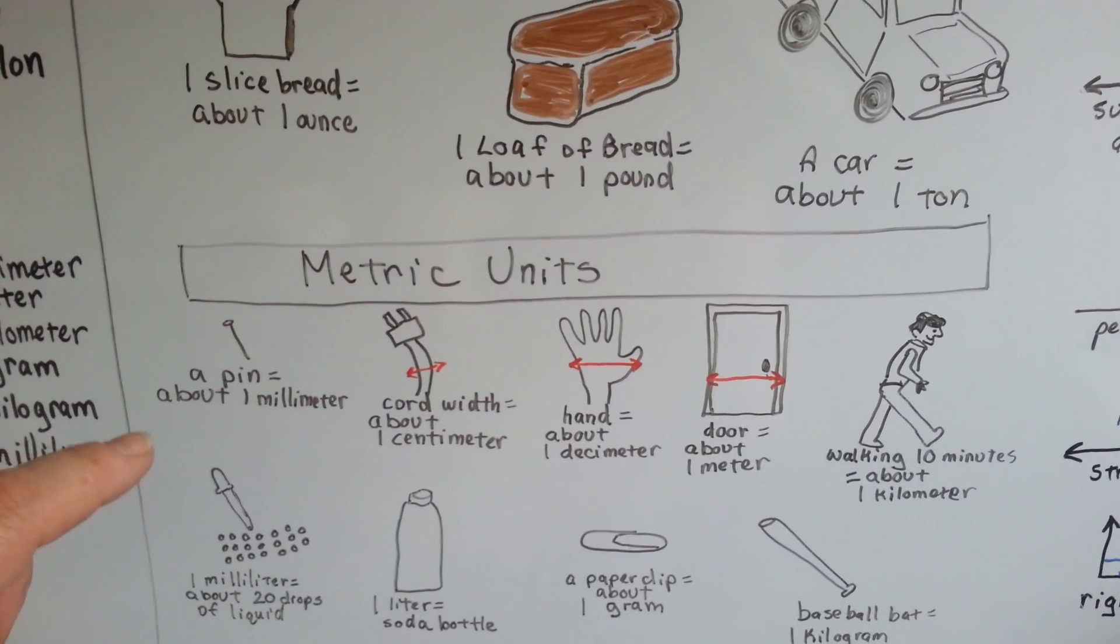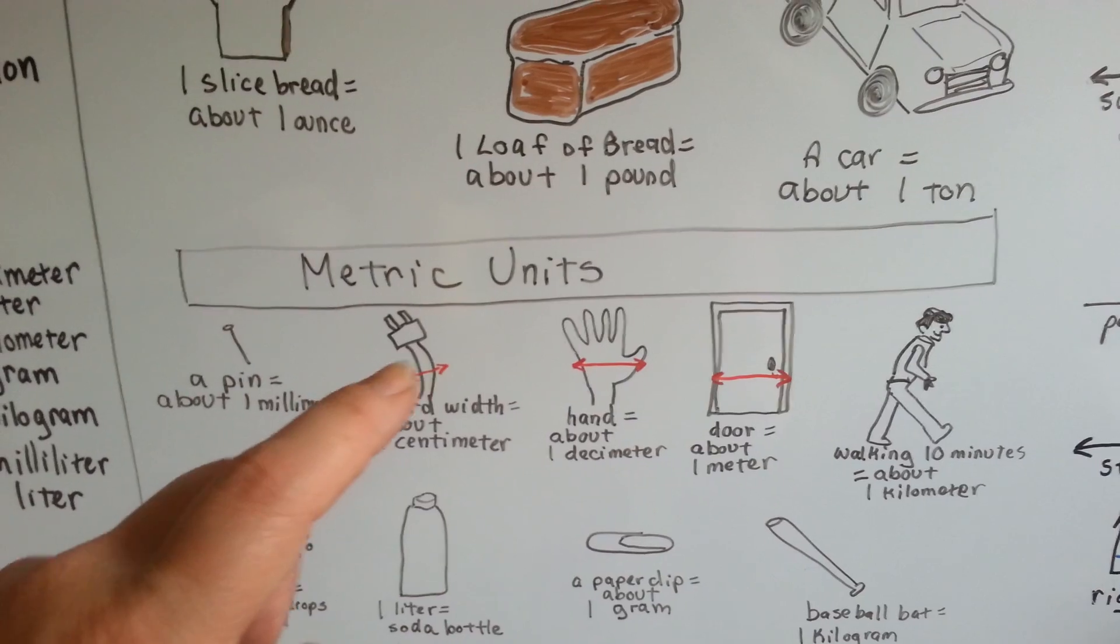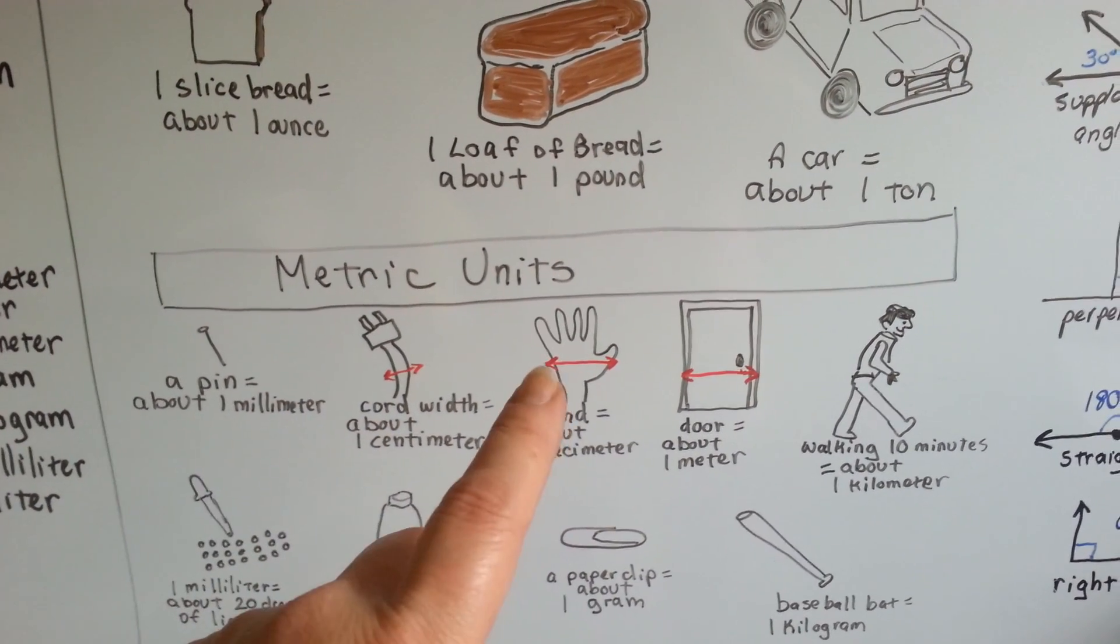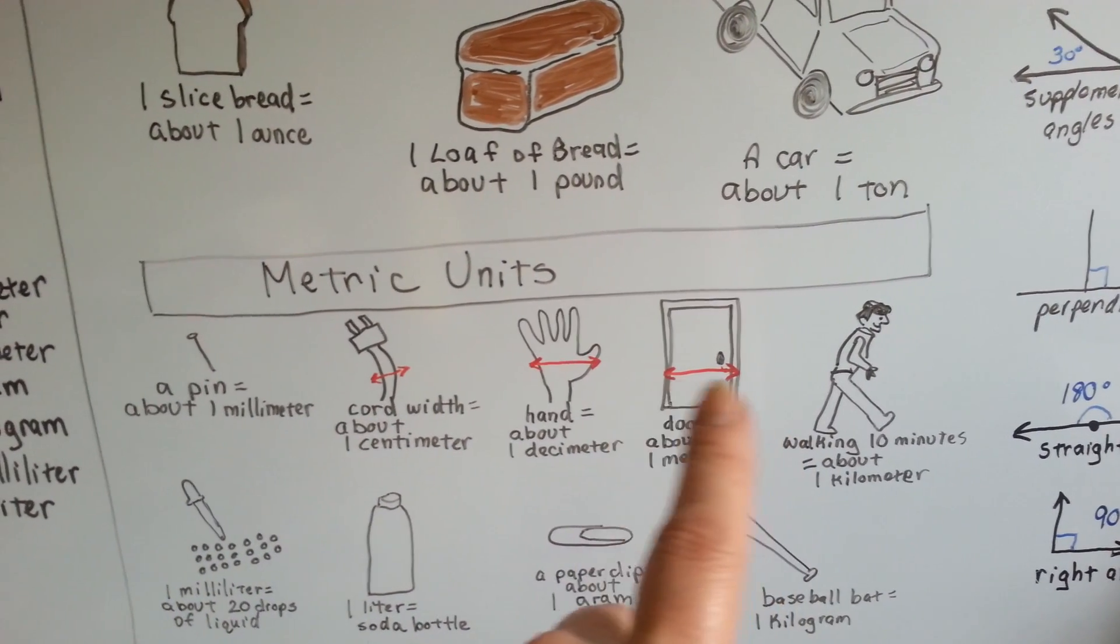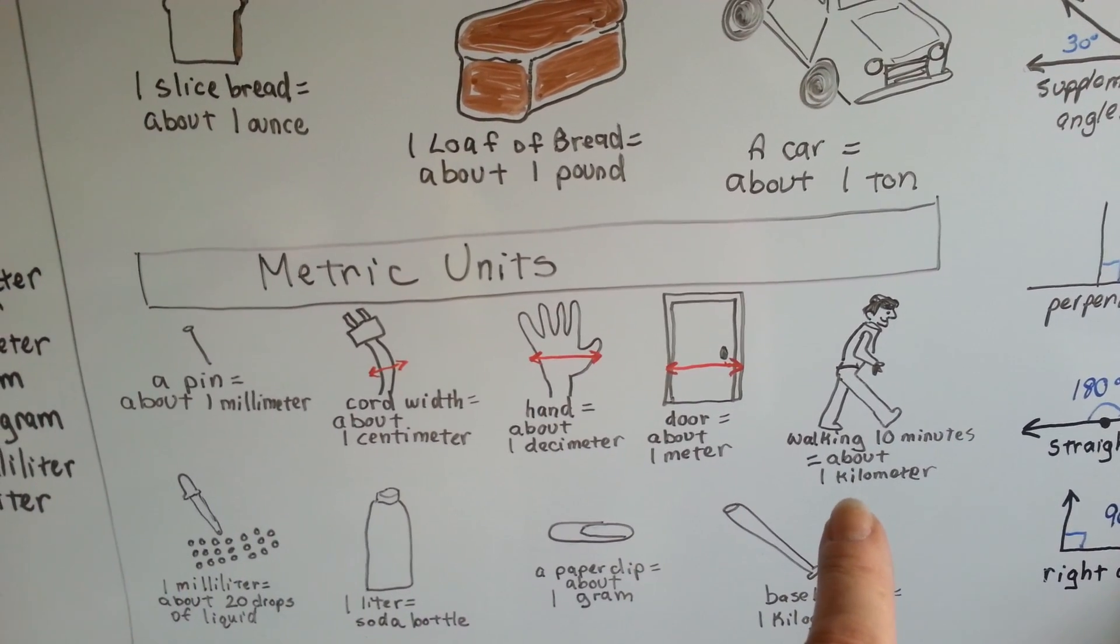For metric units, a pin is about as wide as a millimeter. The width of a cord, an electric cord, is about a centimeter. The width of your hand from side to side is about a decimeter, and about the width of a door is about a meter. Walking 10 minutes is about one kilometer.